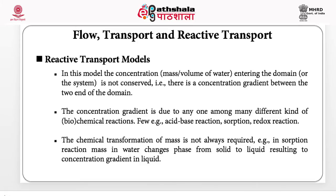Now let us distinguish between a conservative transport and a reactive transport. A reactive transport model is one in which chemical concentration changes over space as a result of chemical reactions. Different types of chemical reactions can take place — for example, acid-base reactions, sorption reactions, redox reactions. It is to be noted that chemical transformation of the mass is not always required. For example, in sorption, mass in water changes phase from liquid to solid, resulting in a concentration gradient in the liquid. Our focus will be more towards understanding reactive transport models, but to begin with, we will learn the different processes that affect transport.